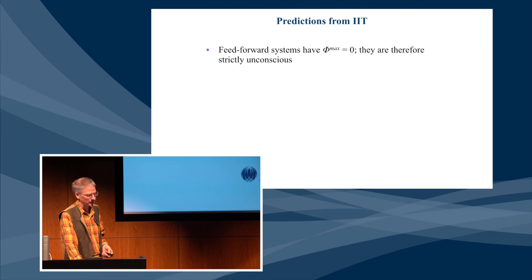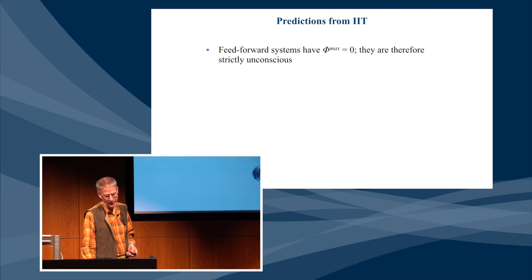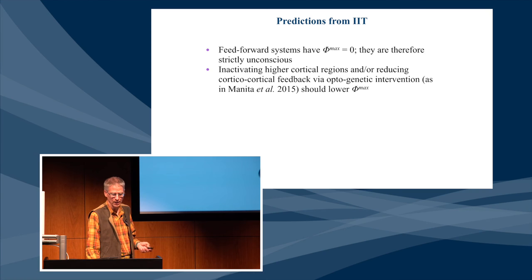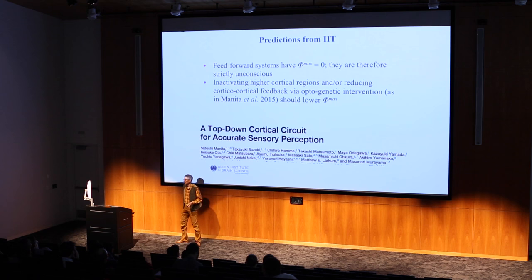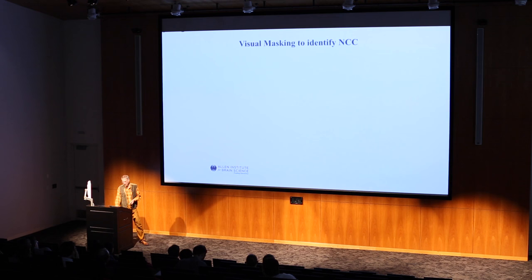In principle, if you have a complex system like cortex that's heavily feed-back, using modern optogenetics tools you should be able to lower phi max — either by inactivating higher cortical regions or by reducing cortical-cortical feedback via optogenetic intervention. There's a beautiful experiment from last year in Neuron by the lab of Murayama that looked at higher-order feedback, and the prediction would be that in such an animal, if you can probe phi max using the ZAP and ZIP procedure, you should find a lower phi max under those conditions.